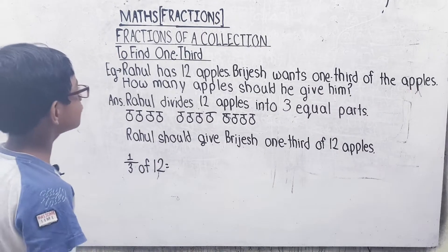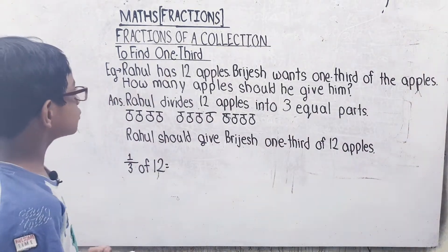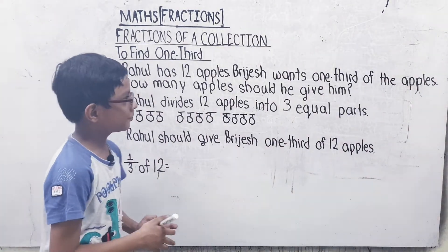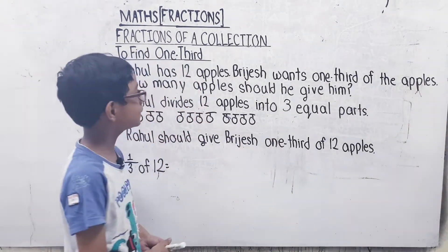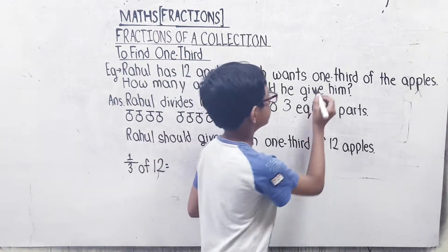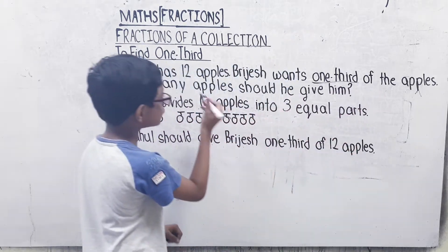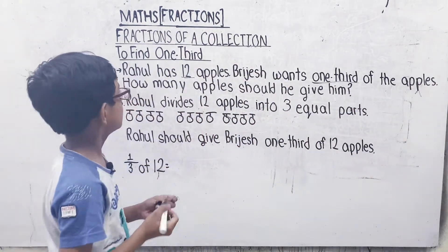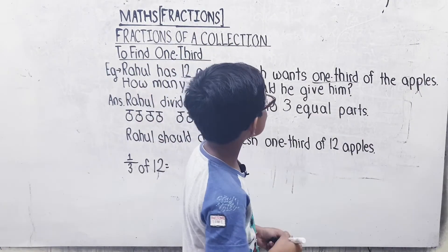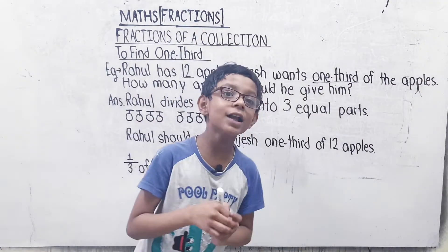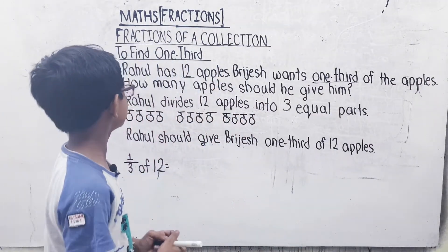To find one-third — how to find one-third? Rahul has 12 apples. Bridges wants one-third of the apples. Rahul has 12 apples. How many apples should he give to Bridges?